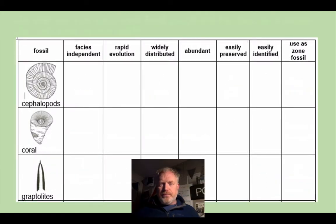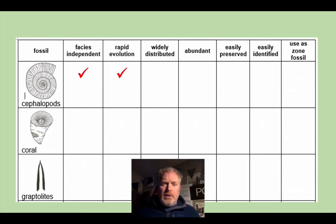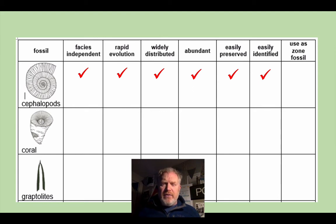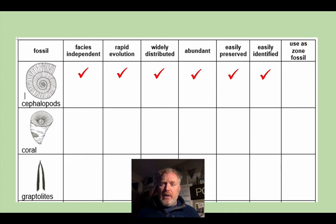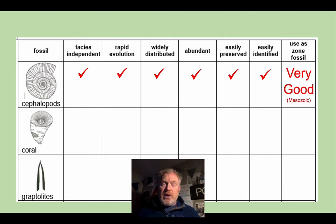If you look at the Cephalopods — this includes fossil groups like the Ammonites — you can see from the number of ticks that we have for this particular group, they're free swimmers, they're facies independent, they evolve rapidly, they were distributed all over the place, massively abundant at points in time, very easily preserved, very easily identified, and they are very good zone fossils. In particular for the Mesozoic, but also for part of the late Paleozoic as well — these are very, very good ones.